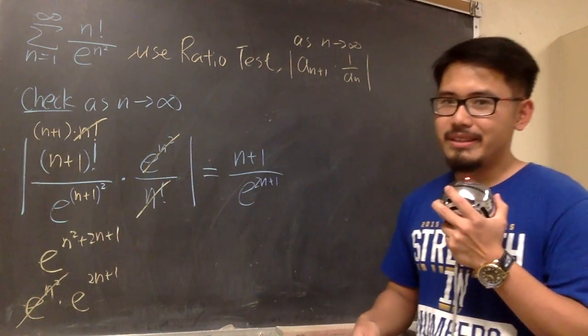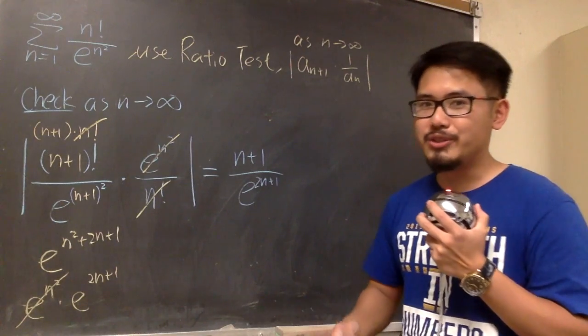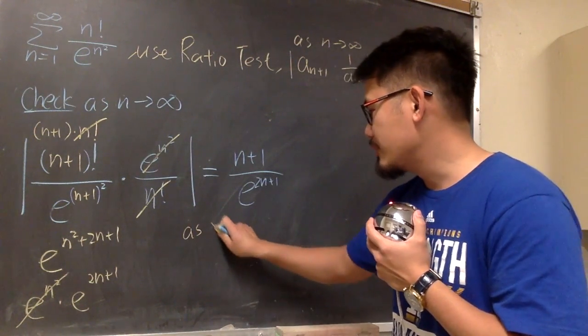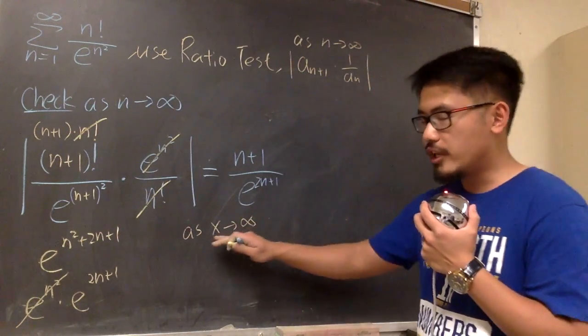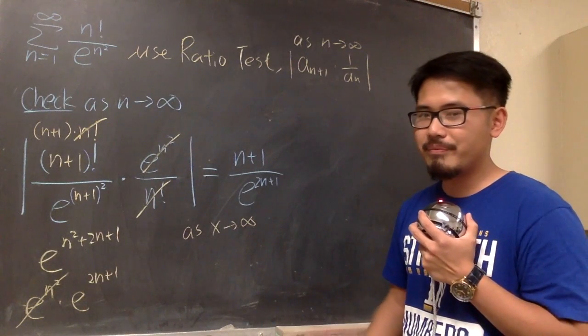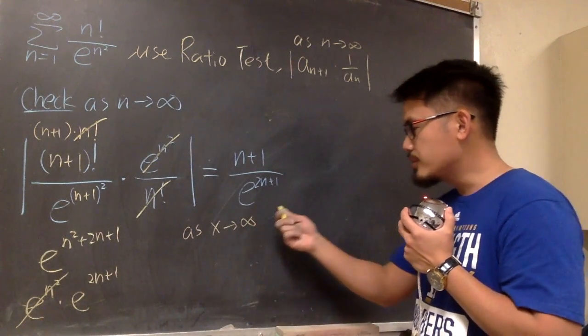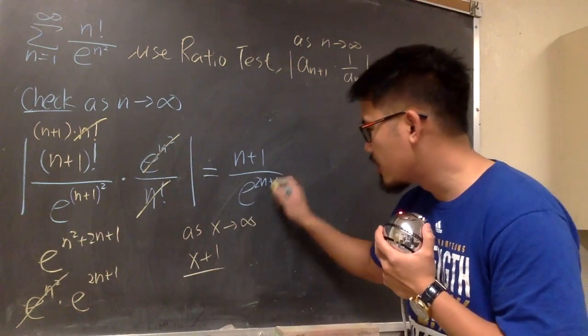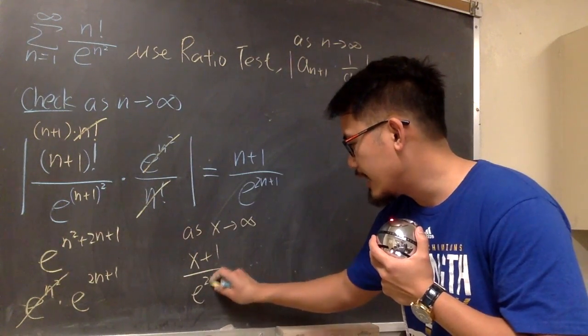To draw a conclusion, you can call the list, but I would like to show you L'Hopital's rule real quick right here. So, I would have to use L'Hopital's rule. It means I have to first change the expression to x, because we are to talk about functions and derivative. As x approaching to infinity, let's look at (x+1) over e to the 2x+1.